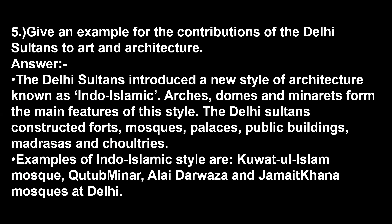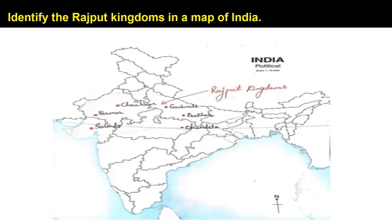The next question is about map work: identify the Rajput kingdoms in the map of India. This can be asked for two to three marks depending on the paper pattern. The Rajput kingdoms to be marked include Solanki, Parmar, Chauhan, Gahadavala, Pratihara, and Chandela. Either the name would be mentioned in the map to be marked, or you mark them based on their positions. You can also take help from this video for Rajput kingdoms map work.